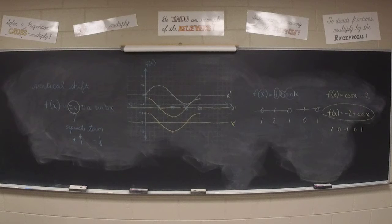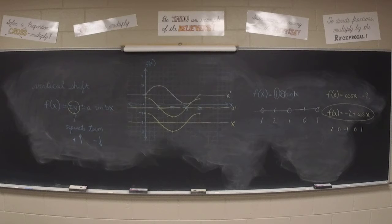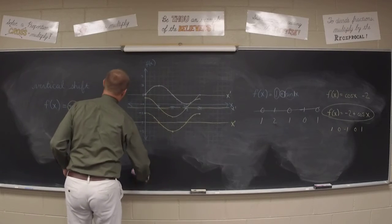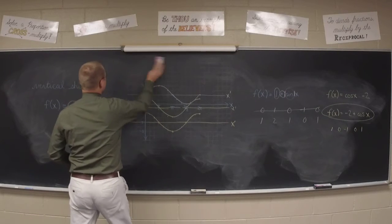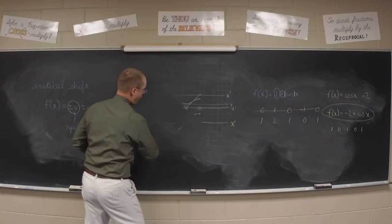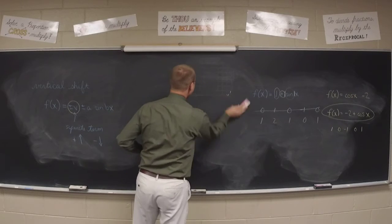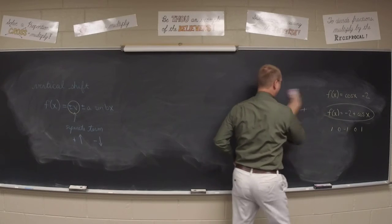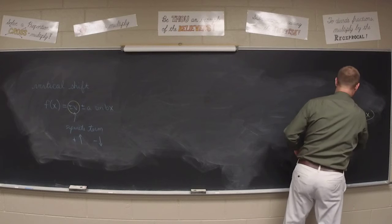Number 22: up 1. Number 23: up 3. Number 24: no vertical shift. Now, of course, we're not going to have vertical shift as the only change — we could shift and change a whole lot of things at once. For instance, f of x equals negative 1 minus 3 sine of x has several changes going on.